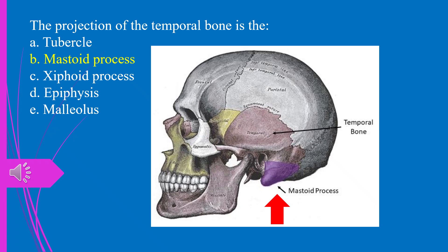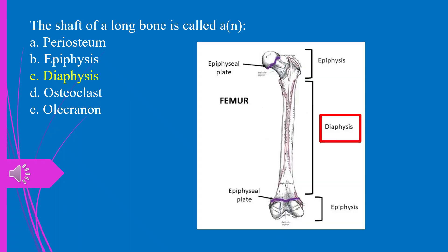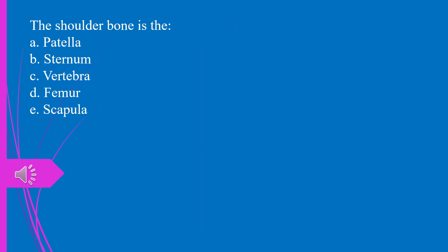Question 40. The shaft of a long bone is called: a) periosteum, b) epiphysis, c) diaphysis, d) osteoclast, e) olecranon. The answer is c, diaphysis.